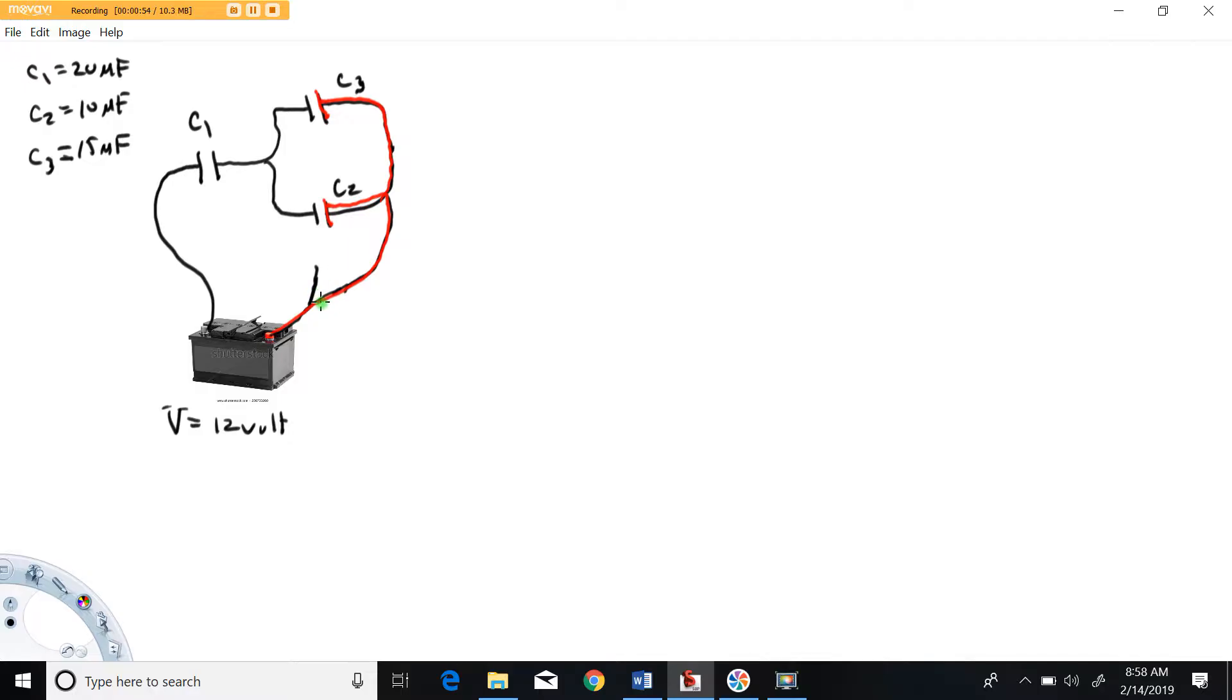Once the circuit is closed charge is going to shift in the circuit. Remember the electrons are going to want to go in that direction and over here in this way giving us charge configurations that look like minus plus, minus plus, minus plus, and we'll call this one Q1 and this one charge 2 here and charge 3 on these three capacitors.